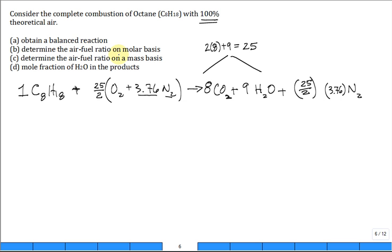Determine the air-to-fuel ratio on a molar basis. Air-to-fuel on a molar basis. How many moles of air to the number of moles of fuel? Number of moles of air is 12.5 times 1 plus 3.76. Because nitrogen is part of the air. Or 12.5 times 4.76.